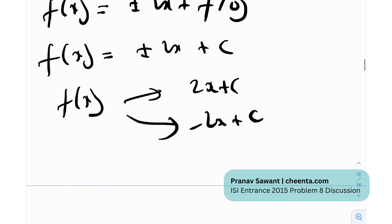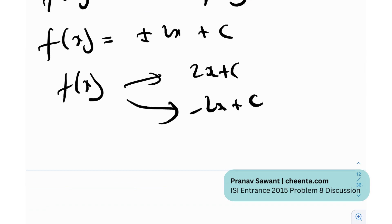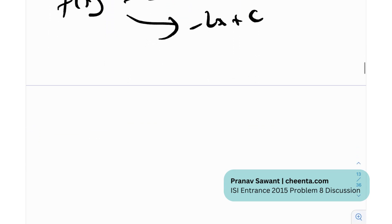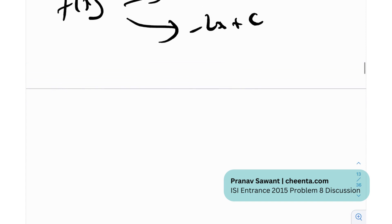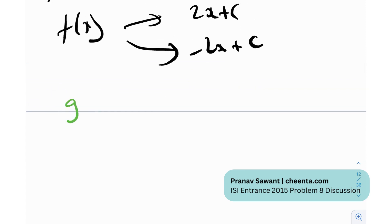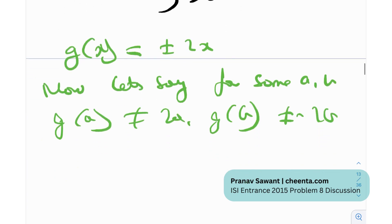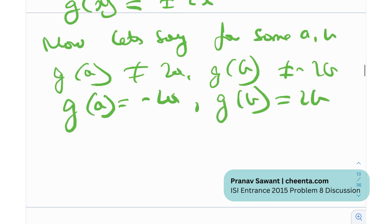Now, well, this is good up to this point, but as we've discussed many times before, there's this point-wise trap that keeps coming in the middle and it can really mess up a lot of things. So maybe let's discuss that. It's quite trivial. The method is, again, same as always. So we got g(x) equal to plus or minus 2x. Now let's say for some a, b, g(a) is not equal to 2a and g(b) is not equal to minus 2b. That essentially means that g(a) is equal to negative 2a and g(b) is 2b.